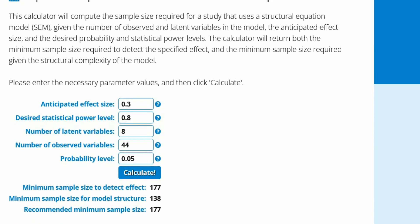Now here are your results. The minimum sample size to detect an effect is 177. Now minimum sample size for model structure is 138. Recommended minimum sample size is 177.